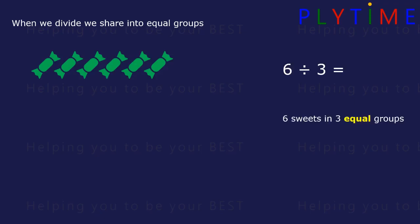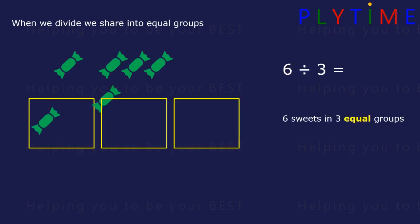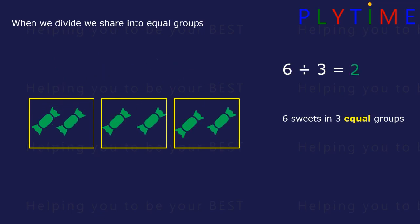Six divided by three. Six sweets in three equal groups. Equal groups of two. Or we can count up in threes until we reach six. Three, six.